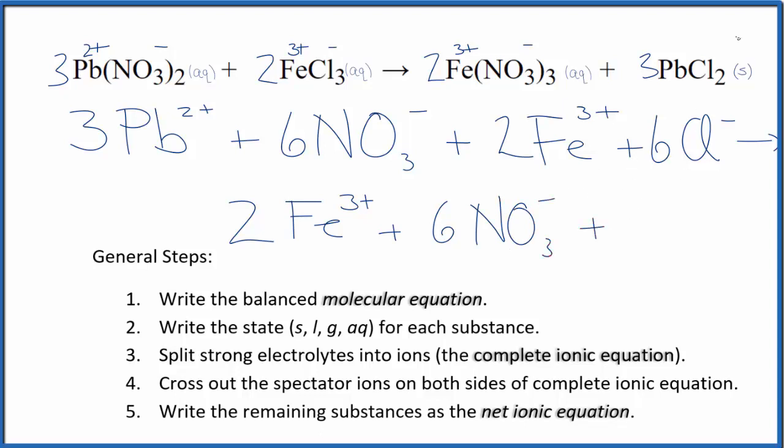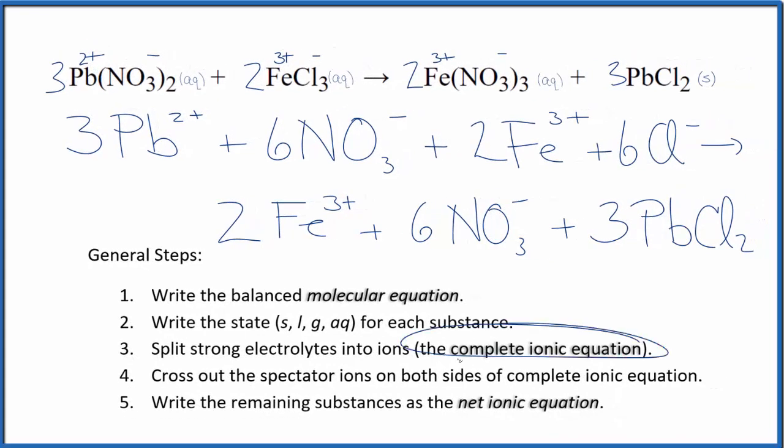And then for net ionic equations, we don't split solids apart. This PbCl2, that's our precipitate. So we're not going to split that apart. Just keep that together. So this is the complete ionic equation.